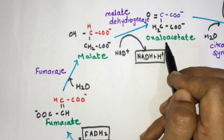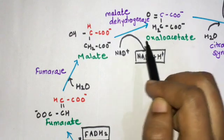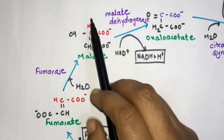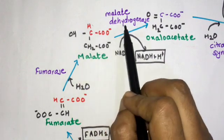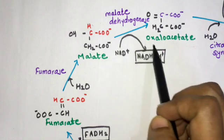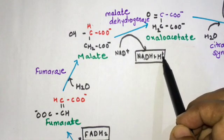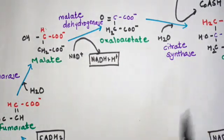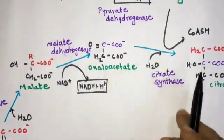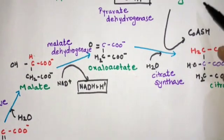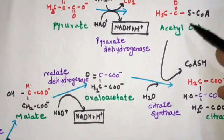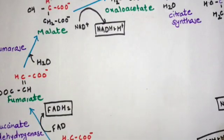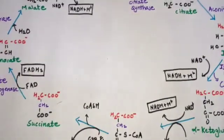In the eighth step, malate is converted to oxaloacetate by malate dehydrogenase. One H is taken out from each position and given to NAD+, converting it to NADH and H+. This oxaloacetate re-enters the cycle, which is why it is called the TCA cycle — acetyl coenzyme A and oxaloacetate combine again via citrate synthase to form citrate, and the cycle continues.